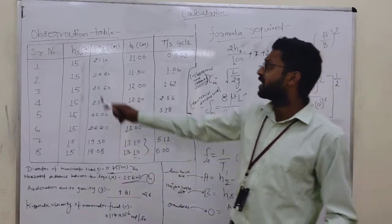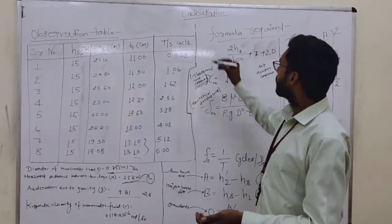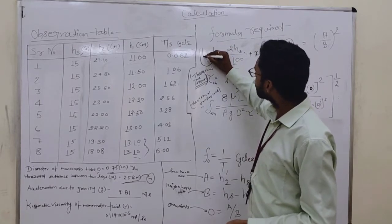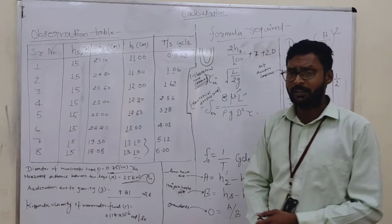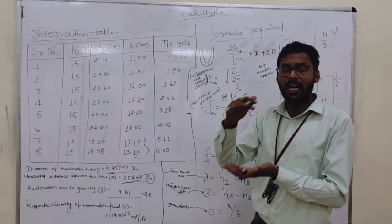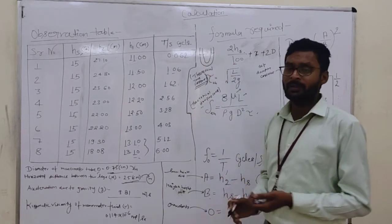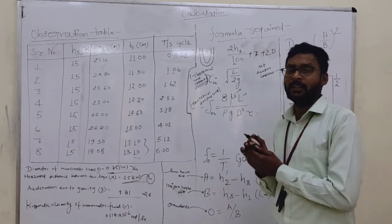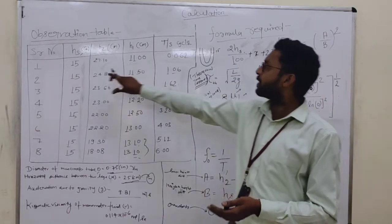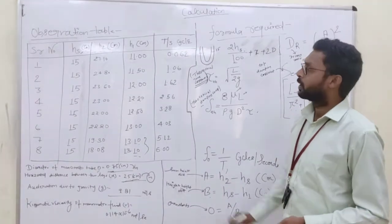The steady state height, as I told you in the video, for example if you have a manometer like this — steady state height means the initial height of the liquid level. It is the same on both sides, both the right side as well as the left side, that is 50, as I have shown in the table.